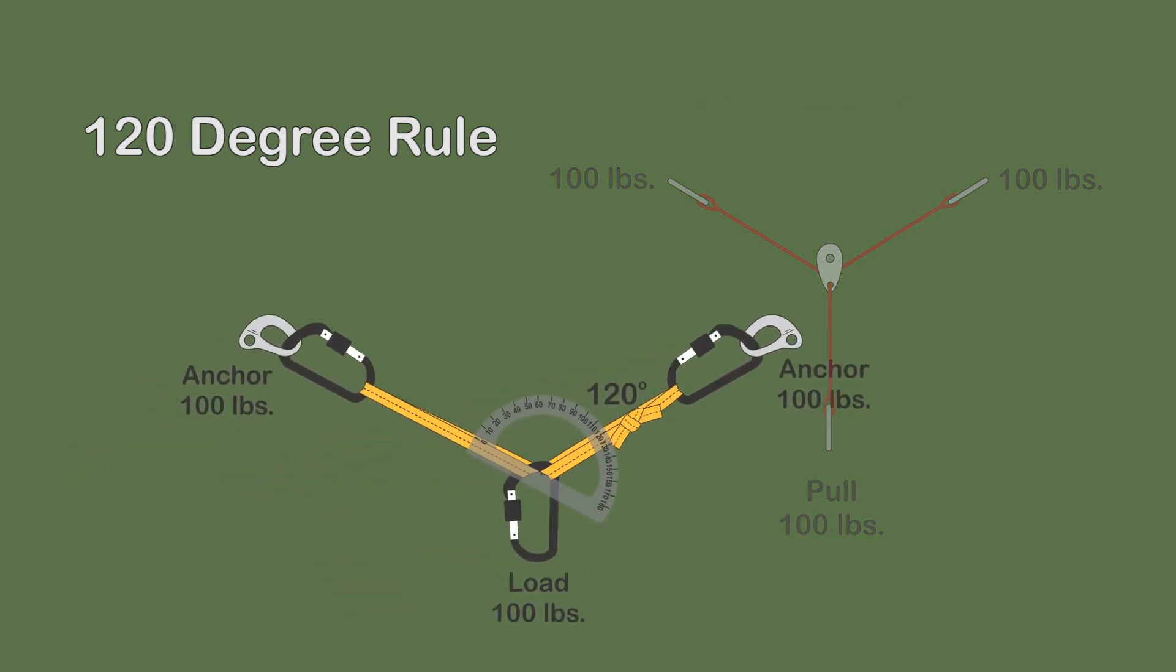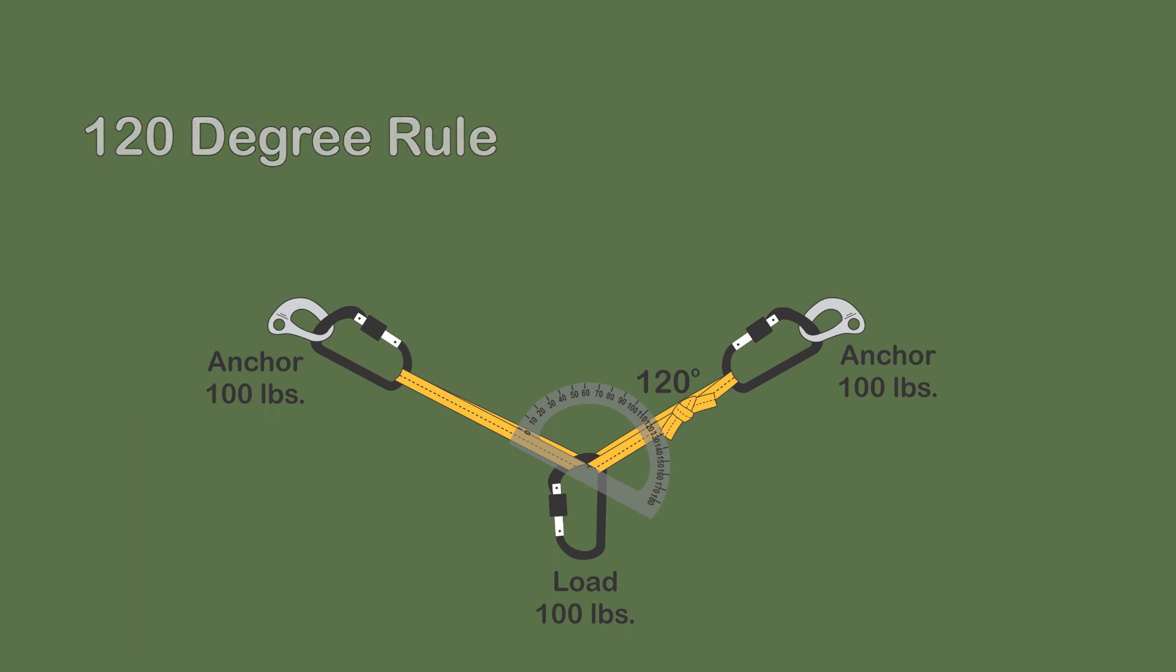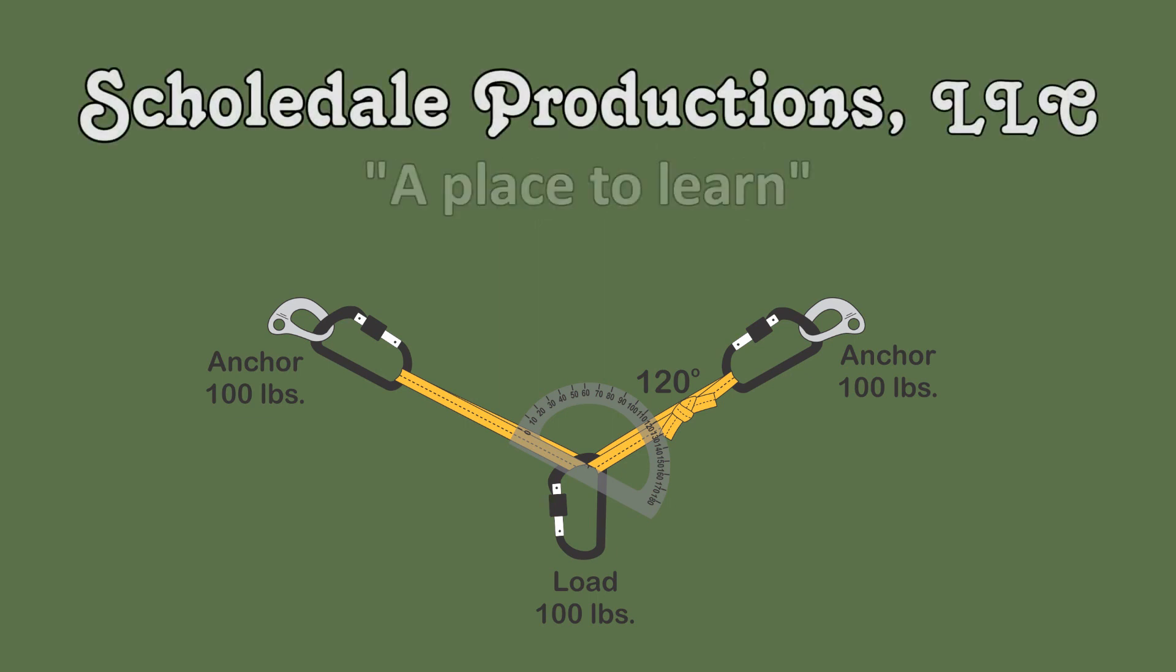Angles greater or less than 120 degrees are equally important. In rigging, the 120 degree rule and its variations is foundational to successfully rigging the system.